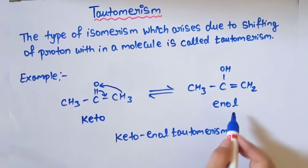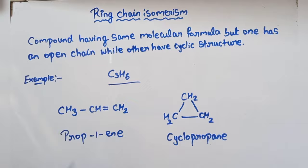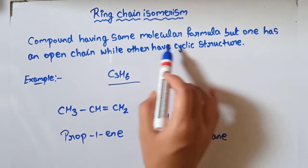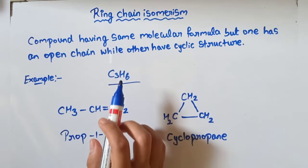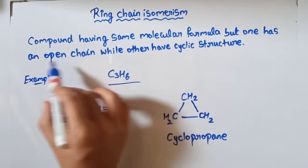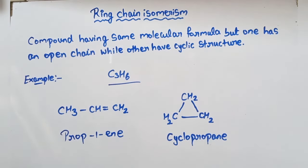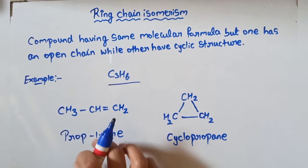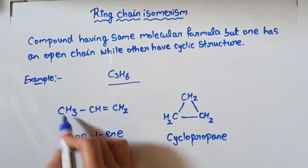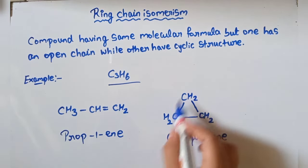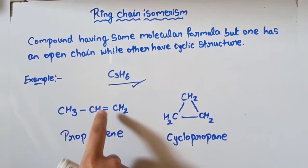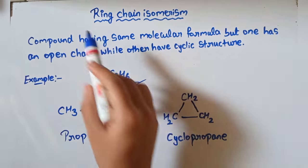The last type is ring chain isomerism. Definition: compounds having the same molecular formula but one has an open chain structure while the other has a cyclic structure. So both compounds have the same molecular formula, but one is an open chain structure and the other is a cyclic structure. This type of isomerism is called ring chain isomerism.